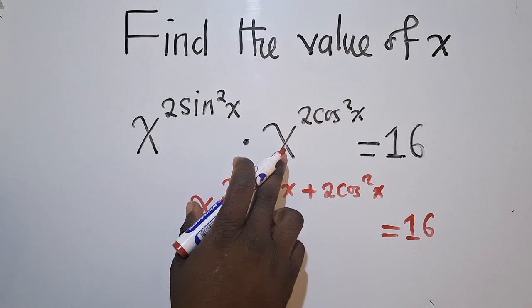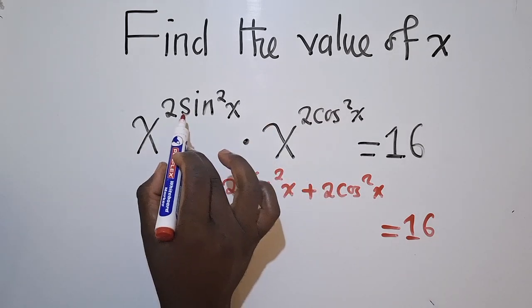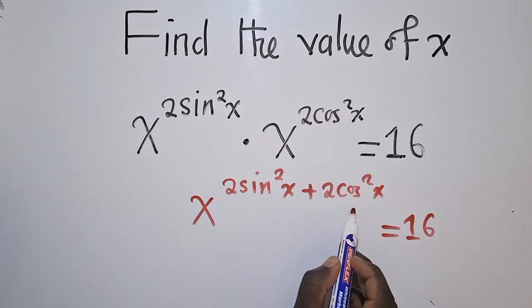When multiplying the same bases, we add the power. So we add this power plus this power and this is what we have.